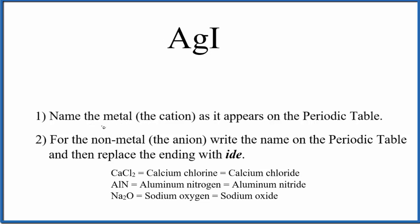So first we write the name of the metal. That's the cation. That's silver. Ag is silver on the periodic table.